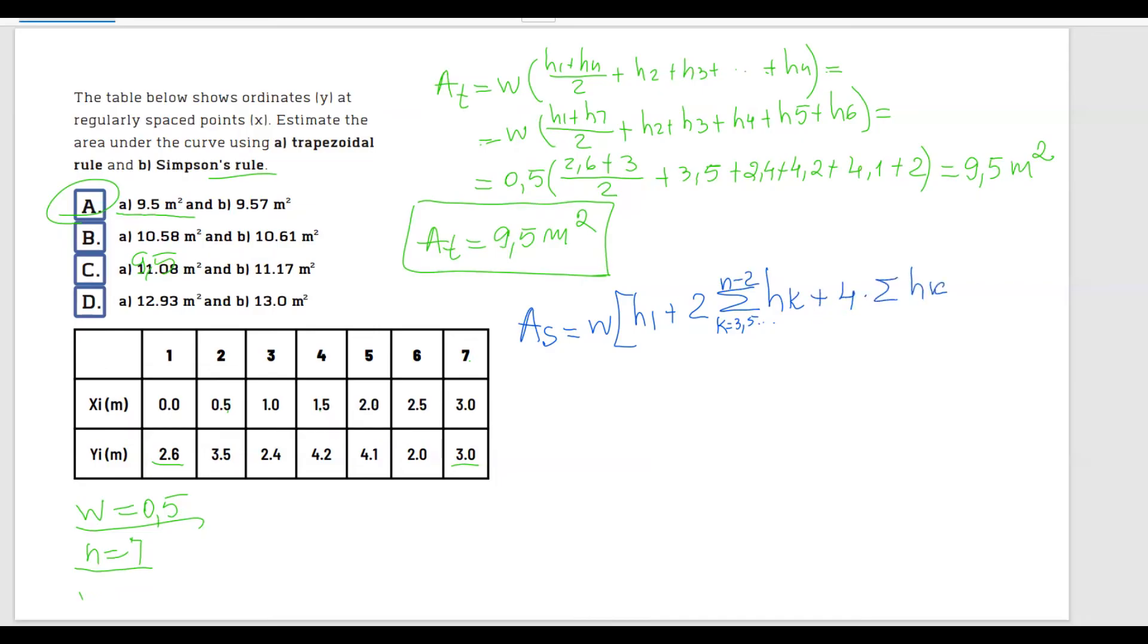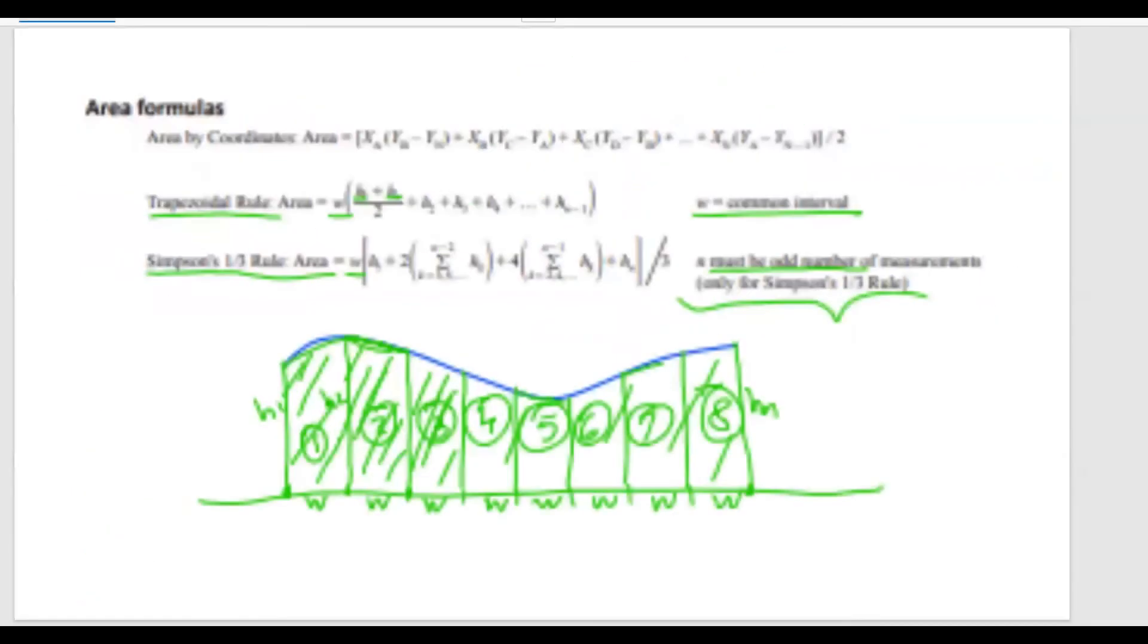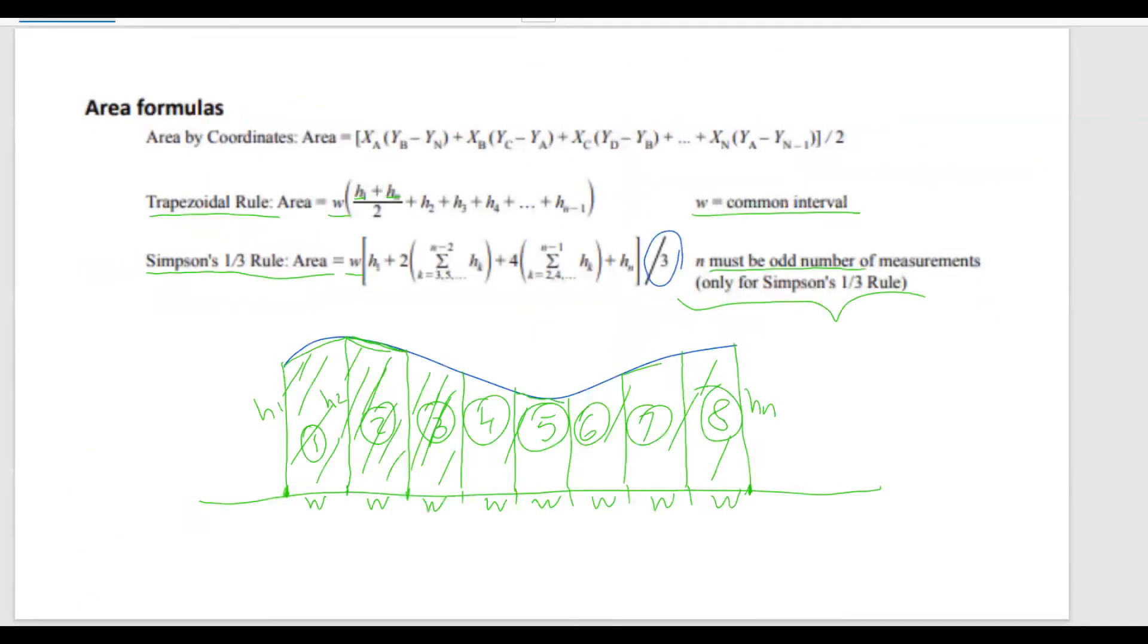And then plus 4 multiplied by the sum of hk where k equals to the even numbers all the way to n minus 1, plus hn. And of course this is all divided by 3. If you remember, don't forget about this, it's divided by 3, where we can just multiply it by 1 over 3 like I did over here.